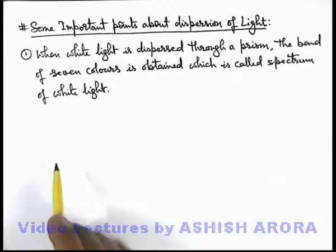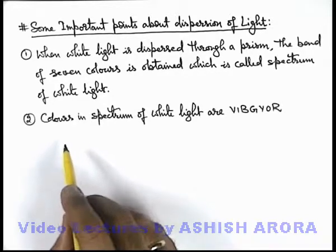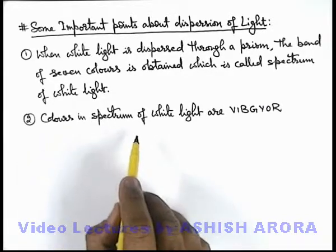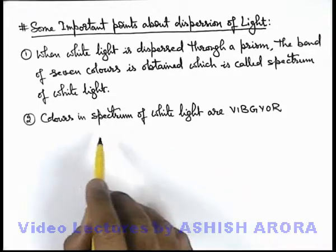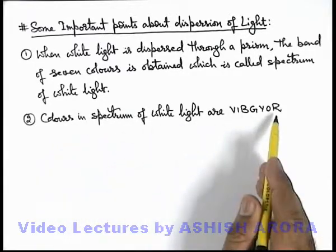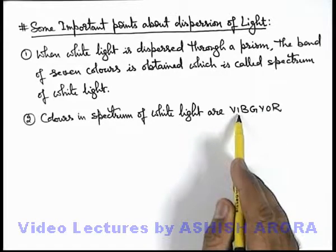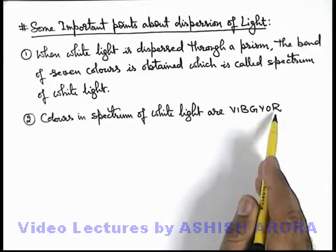The next point is about the colors in the spectrum of white light. The colors in the spectrum of white light are VIBGYOR, which correspond to violet, indigo, blue, green, yellow, orange, and red.